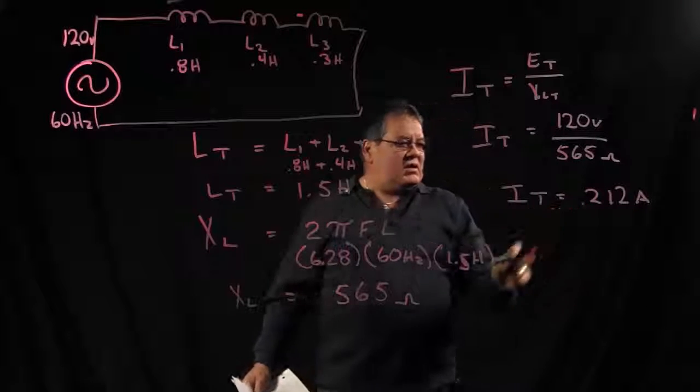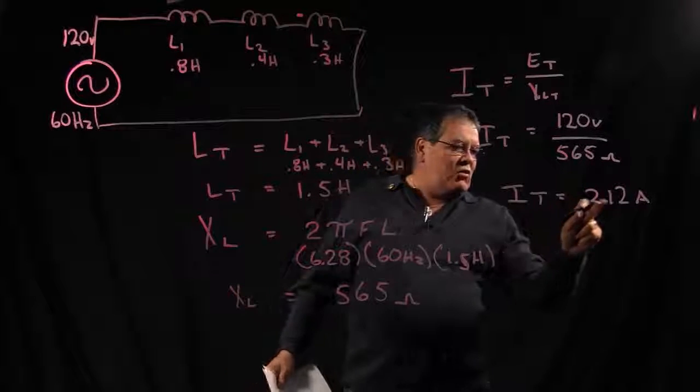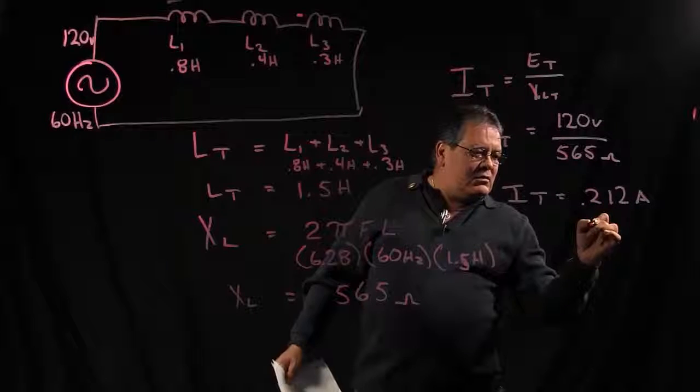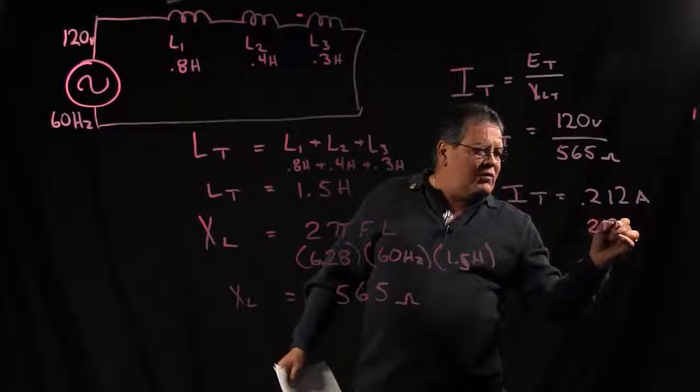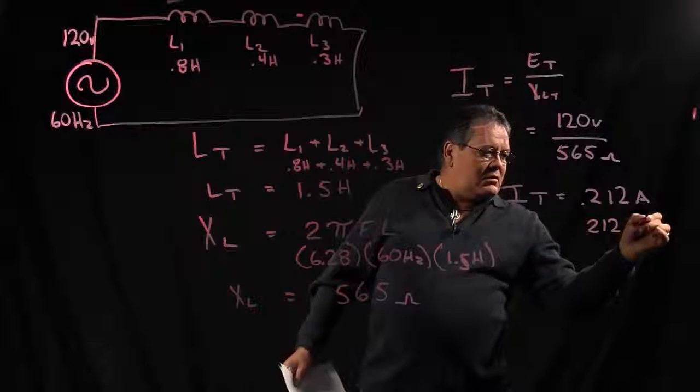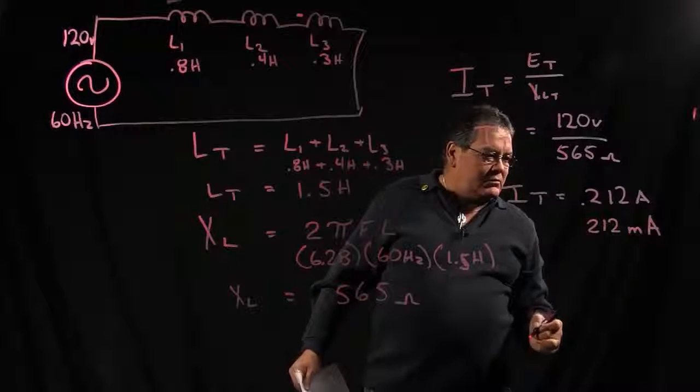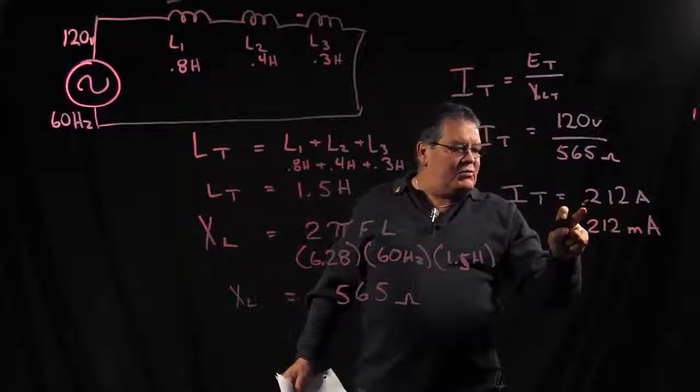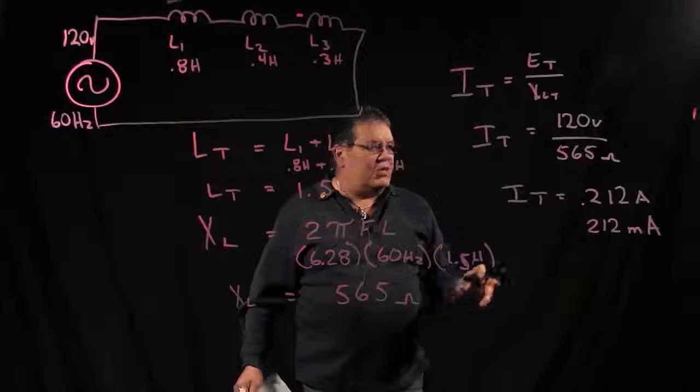Now since this is a decimal equivalent, we want to change that over. We're going to move it three decimal places to the right, which would be 212, and that makes it milliamps. If we move our decimal point the other direction, it would make it kilo. You've got to always make sure that you know how to convert your decimal prefixes.